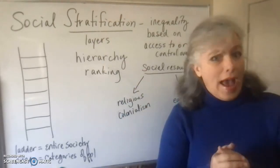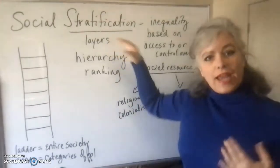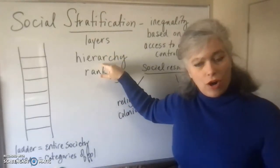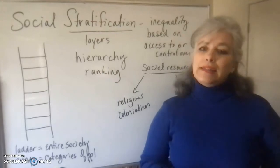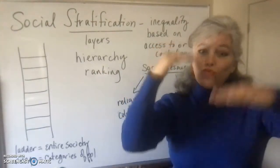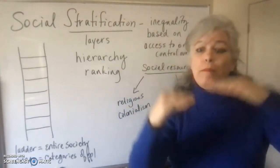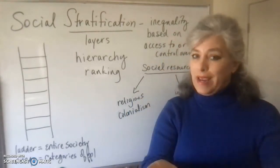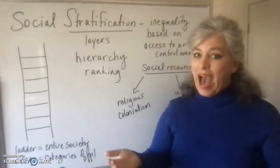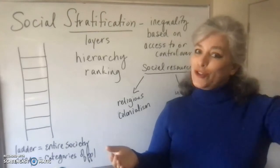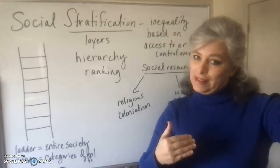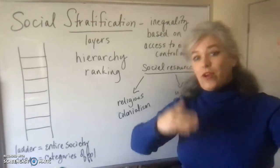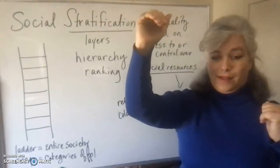Well, society is the same way. Society has layers also — it's a hierarchy. This word 'hierarchy' means ranking; it means status compared to each other. We've talked about what social status means, but some statuses have a higher social value compared to other statuses, and a lower social value compared to yet other social statuses.